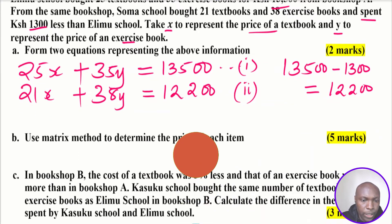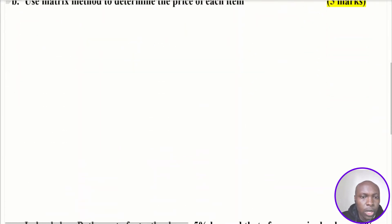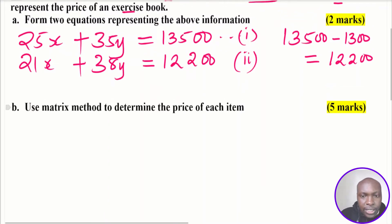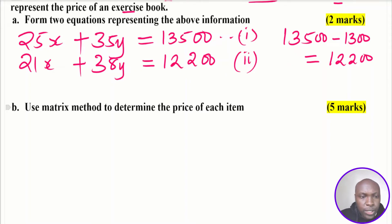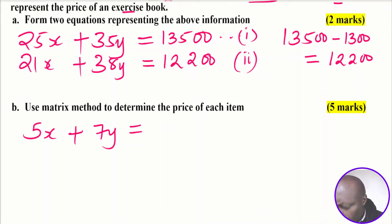Part two: use the matrix method to determine the price of each item. We use the matrix method to solve these simultaneous equations. First, we simplify the first equation: 25X + 35Y = 13,500. Dividing all terms by 5, we get 5X + 7Y = 2,700.